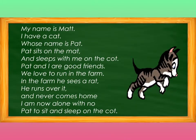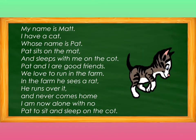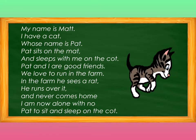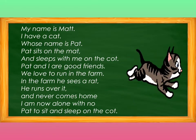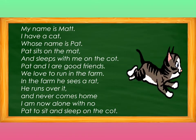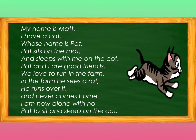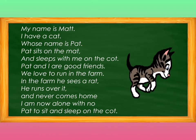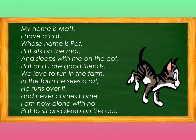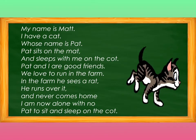My name is Matt. I have a cat whose name is Pat. Pat sits on the mat and sleeps with me on the cot. Pat and I are good friends. We love to run in the farm. In the farm, he sees a rat. He runs over it and never comes home. I am now alone — no Pat to sit and sleep with me on the cot.